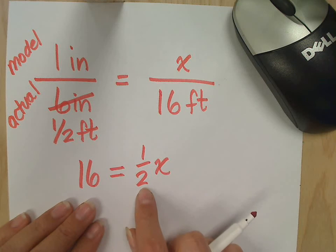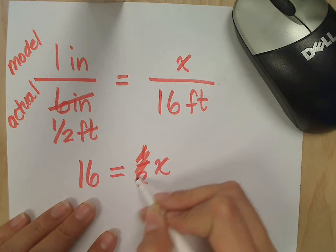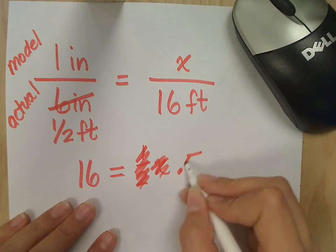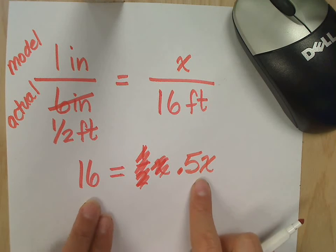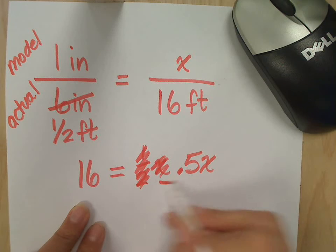How many of you changed this half into 0.5? Raise your hand. Okay, the majority of you did. So I'm going to go ahead and show you that way. So, 0.5x. What would I do now? I'm dividing by 0.5 or half.